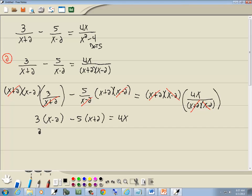So 3 times x is 3x. 3 times negative 2 is negative 6. Negative 5 times x is negative 5x. Negative 5 times 2 is negative 10. No matter where you are in algebra, you should combine together like terms. Here we've got 3x minus 5x, that gives us negative 2x. And here we've got negative 6 and negative 10, which gives us negative 16.